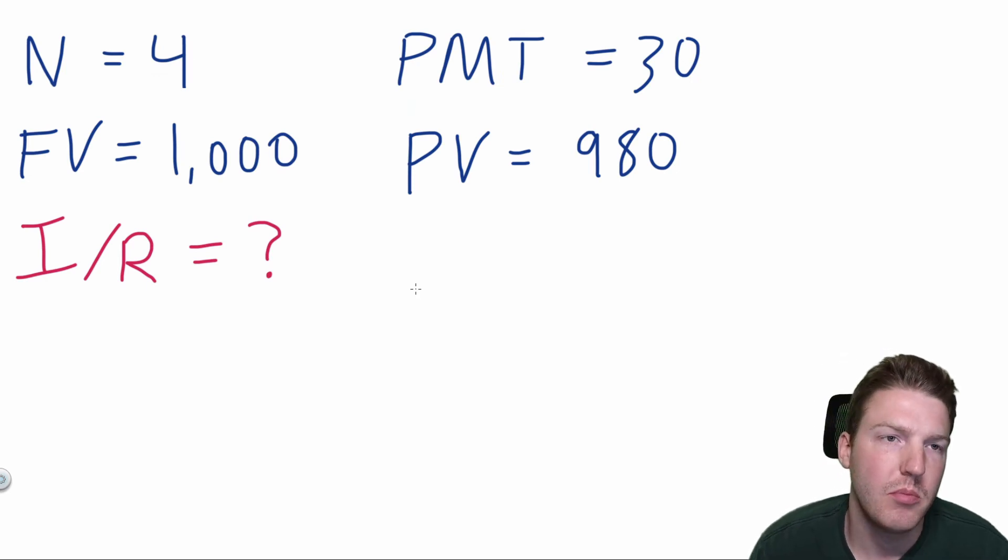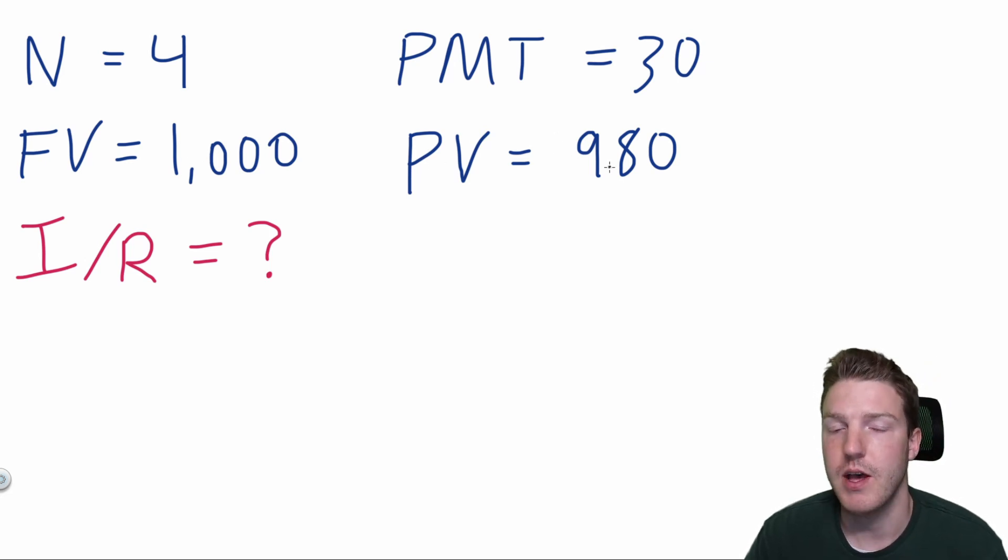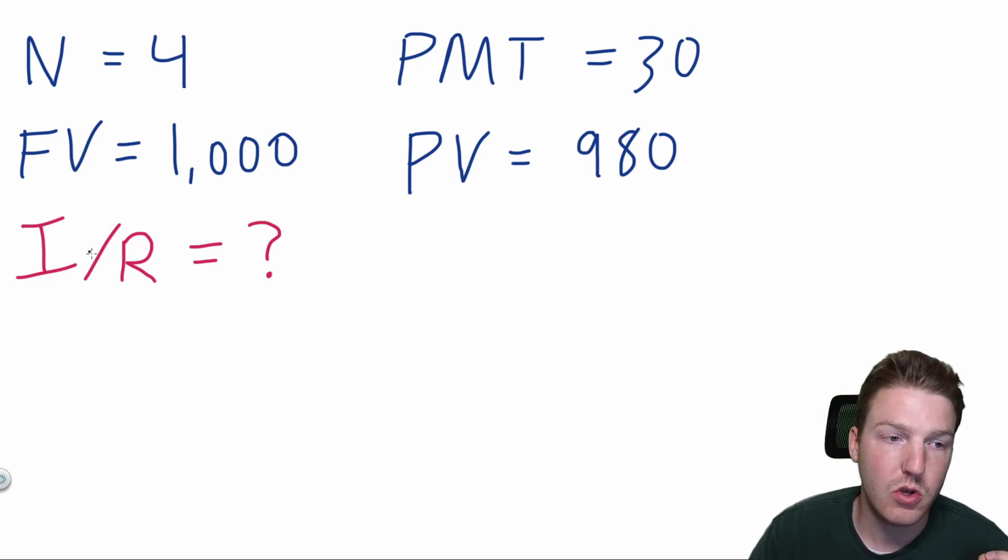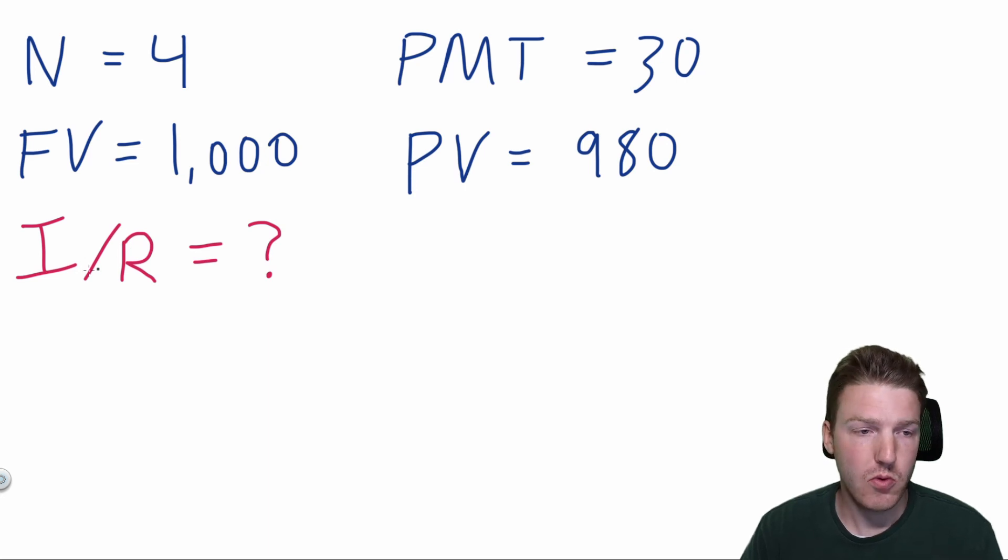You may find yourself working a problem where you're giving the following four inputs. So the same number of years as before, N equals four. Payment still equals 30, paying $30 a year, which is a 3% coupon rate like we talked about before. Future value is still $1,000. But now we know the present value, which is $980. We're just given that, we know what it is. But we're told we need to find the yield to maturity. And the interest per year, the I over R, is the yield to maturity. Well, how do we find that information?